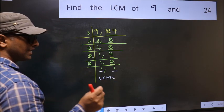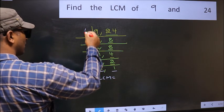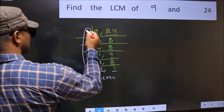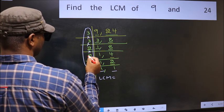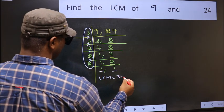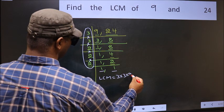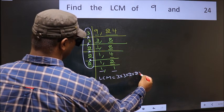LCM is the product of these numbers. That is 3 into 3 into 2 into 2 into 2.